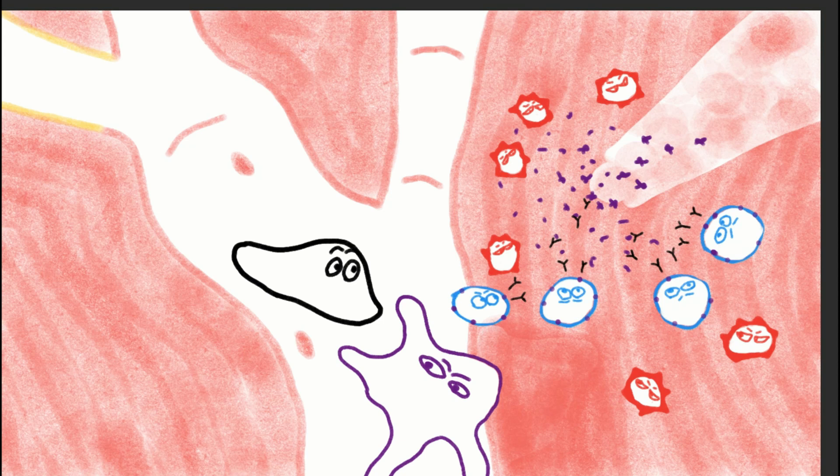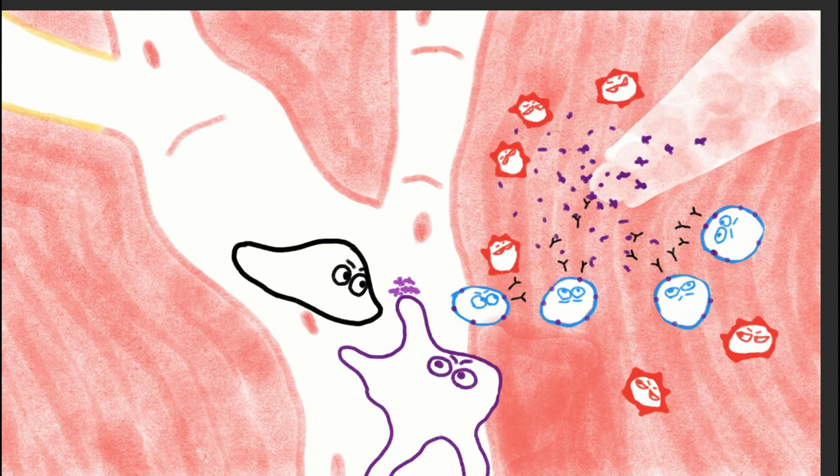During this time, a macrophage, which is kind of tired, approaches the T cell. Hello, boss. Thank goodness you're here. Thanks for bringing more help. The T cell replied confidently, yep, that's my job. What can you report? Well, we've been eating these things up. The antibodies made by the B cells stick to the invaders, and it really helps.